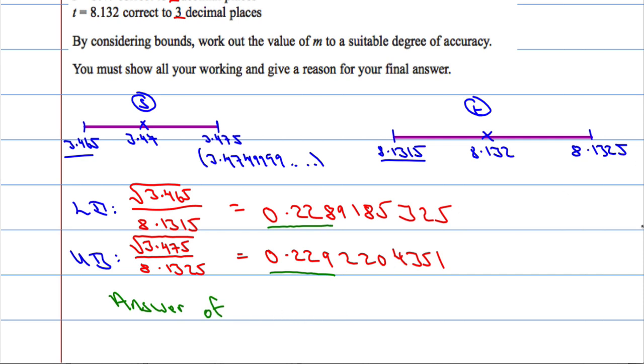So an answer of 0.229 to 3 decimal places as it satisfies both upper bound and lower bound. So if I use the upper bound and I give it to 3 decimal places, I get 0.229. If I use the lower bounds and I give it to 3 decimal places, I also get 0.229.